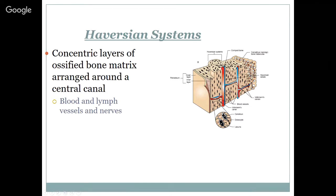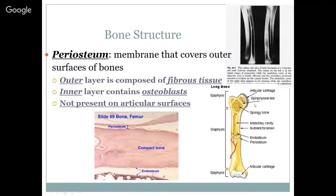Remember: Haversian canals go lengthwise, and Volkmann's canals go crosswise. The periosteum is that membrane that covers the outer surface of the bone. There's an outer layer composed of fibrous tissue and an inner layer that contains osteoblasts. Osteoblasts are baby bone cells. This periosteum is not present on articular surfaces — the places where bones meet bones.